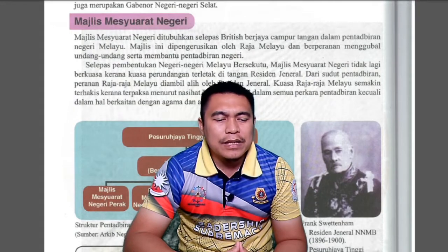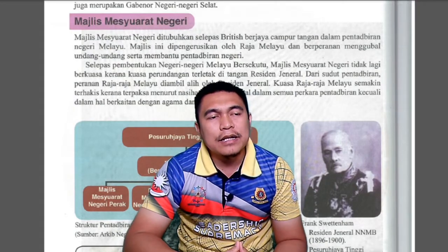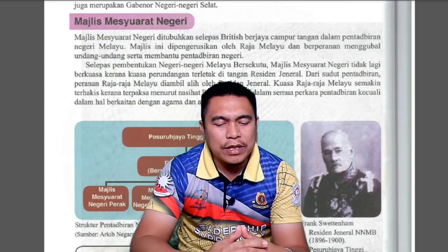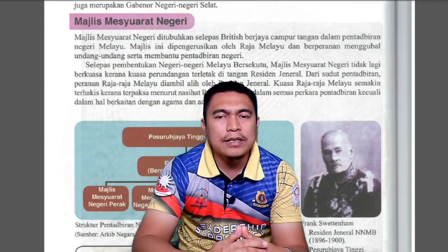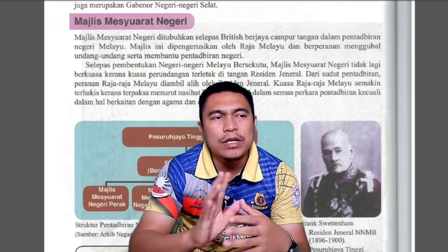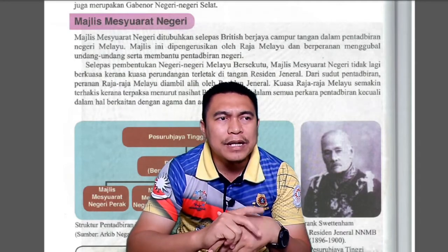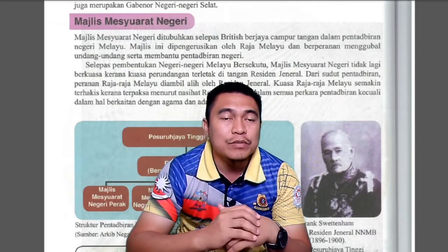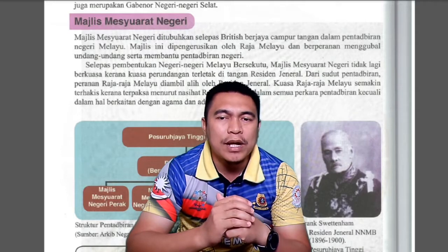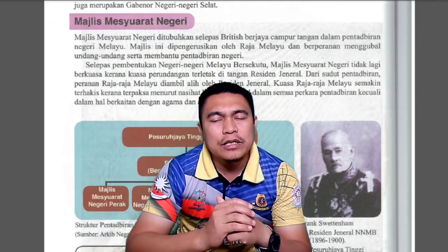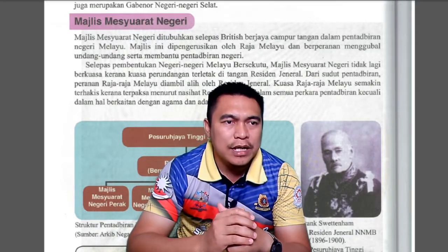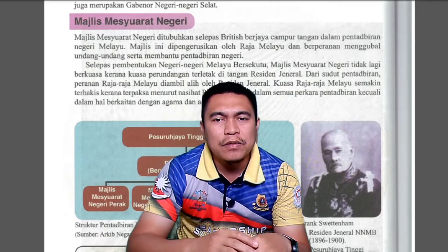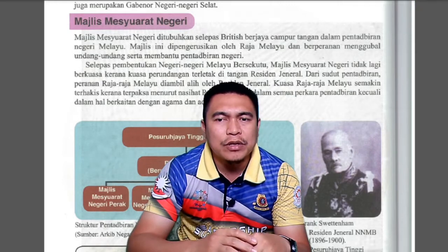Seterusnya, kita lihat pula pentadbiran negeri-negeri Melayu bersekutu. Kalau kita lihat, dia ada dua kategori, iaitu di peringkat pusat, iaitu Majlis Mesyuarat Persekutuan, yang seterusnya adalah Majlis Mesyuarat Negeri. Ada dua. Jadi kita lihat dahulu Majlis Mesyuarat Negeri.